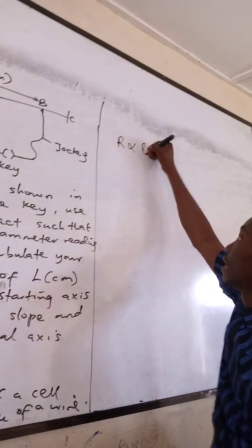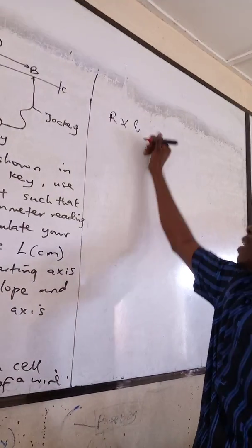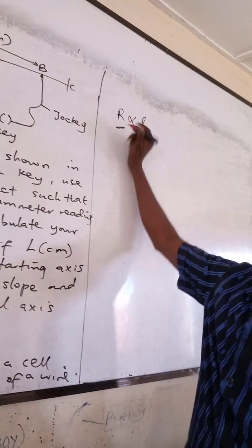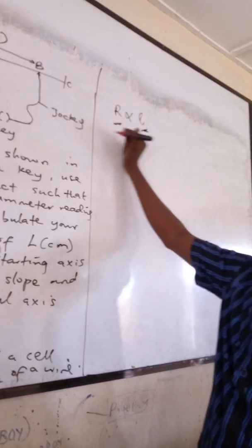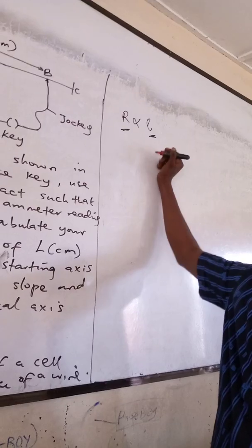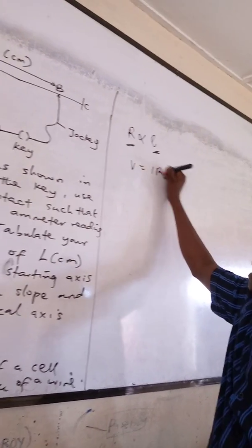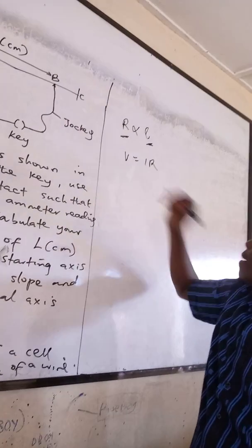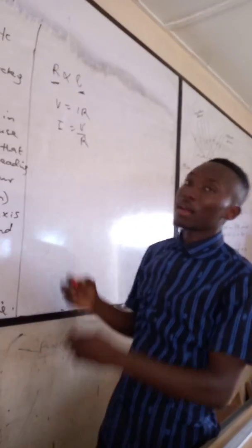We all know that our resistance is directly proportional to length. So as the length is increasing, resistance is also increasing. So what is the relationship between resistance and current? V is equal to IR.